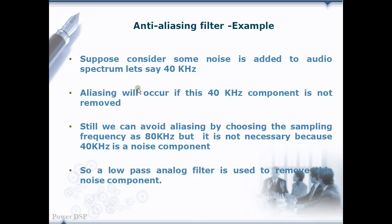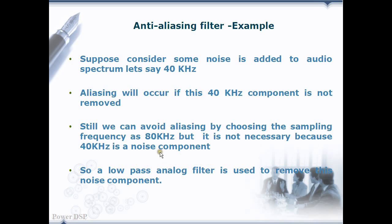For example, a 40 kHz signal is added to our original signal. Then what will happen? Definitely, aliasing will occur if this component is not removed. We know aliasing will destroy our spectrum. Still, we can avoid aliasing by choosing the sampling frequency as 80 kHz. But it is not necessary because 40 kHz is a noise component.